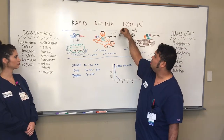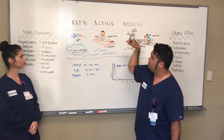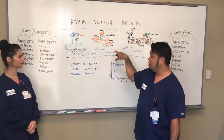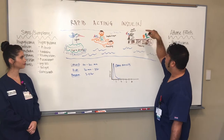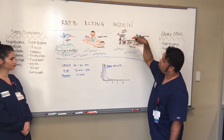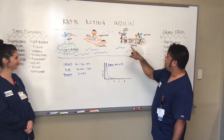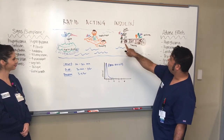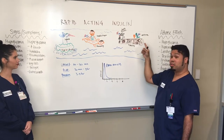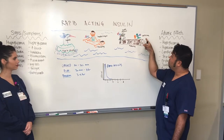We have insulin Lispro, which is represented by a pro with big lips, and he's on top of a human log. We have insulin Aspart, represented by an ass with a part in his hair, and he's on top of a novel log — there's a novel on the log. And then we also have a glue lizard for glulisine.